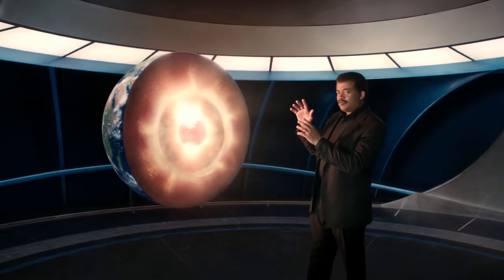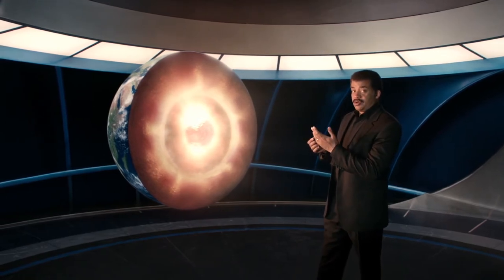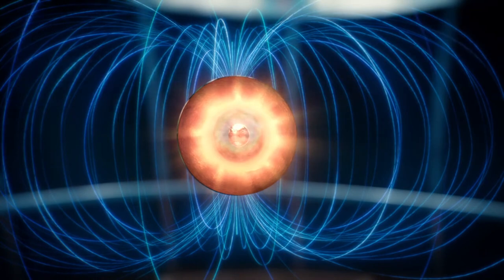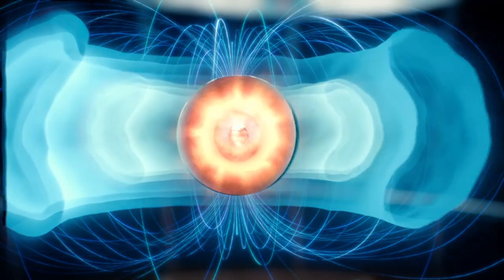Liquid iron circulating around the solid part of the core as Earth rotates acts like a wire carrying an electric current. Electric currents produce magnetic fields, and that's a good thing.